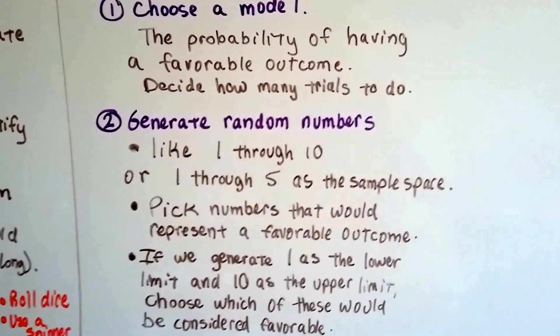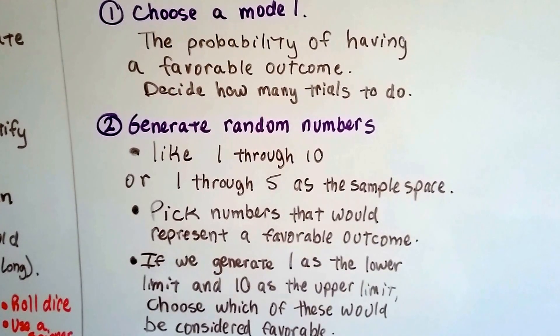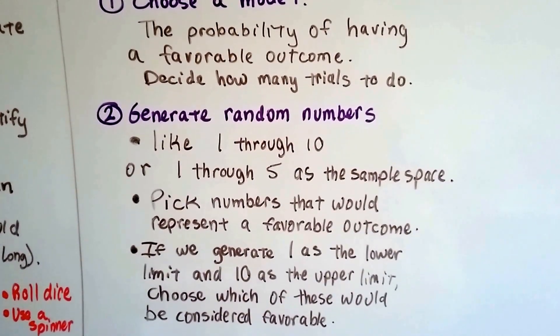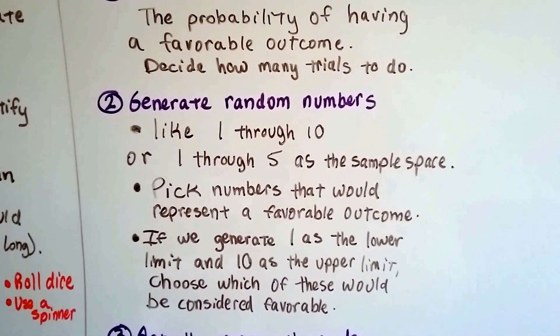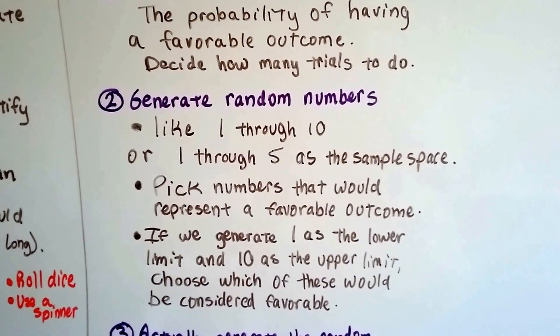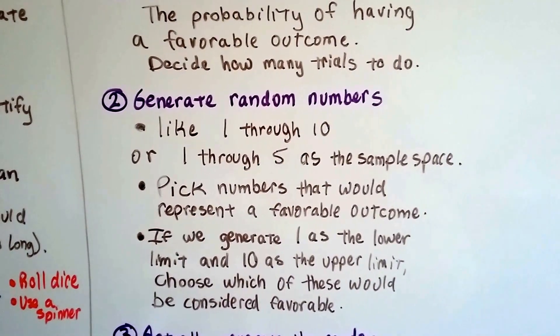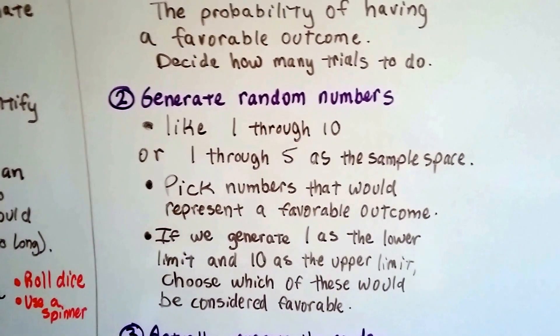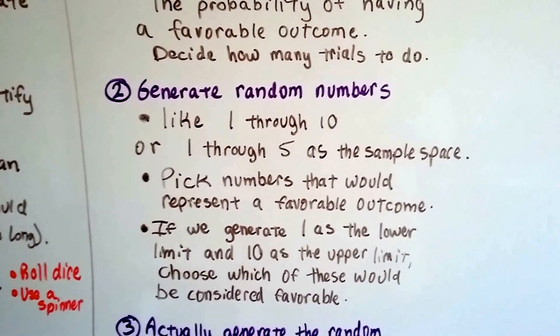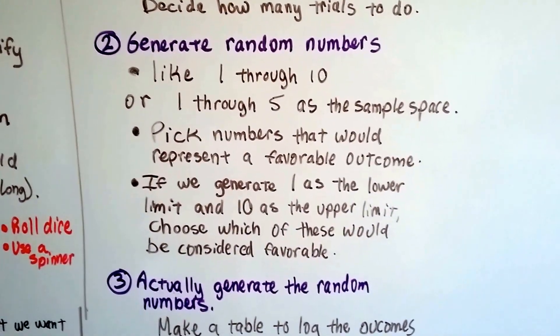You generate the random numbers like 1 through 10 or 1 through 5 as your sample space. You pick numbers that would represent a favorable outcome. And if we generate 1 as the lower limit and 10 as the upper limit, you choose which of these would be considered favorable. Maybe you'd like the even numbers to be favorable, or the odds, or you'd like 1, 2, 3 to be favorable, however you want to do your experiment.